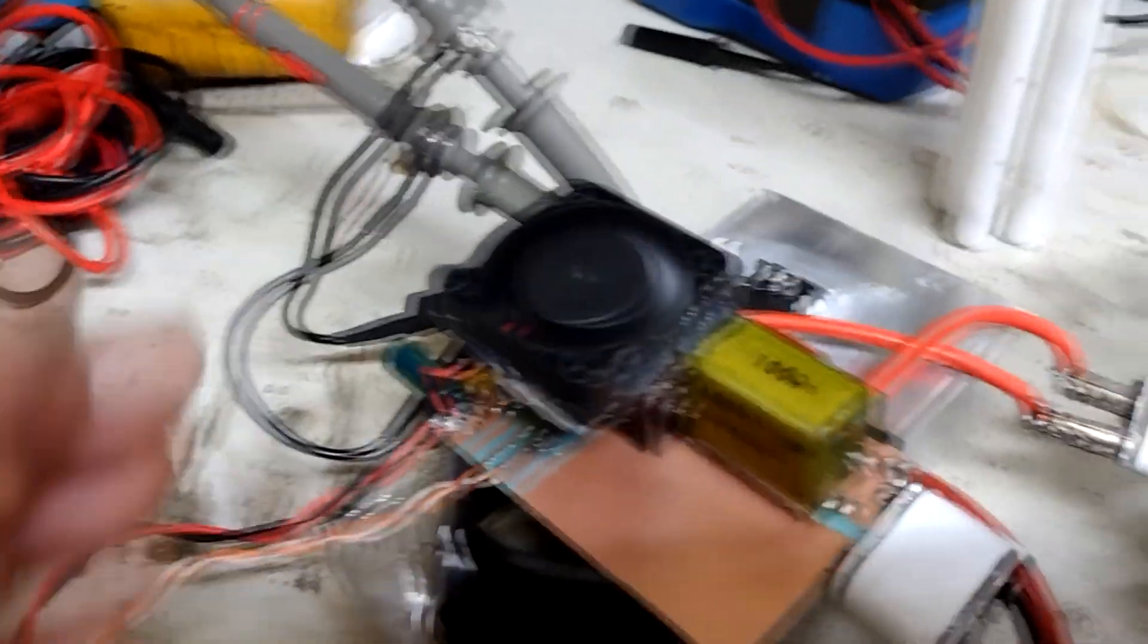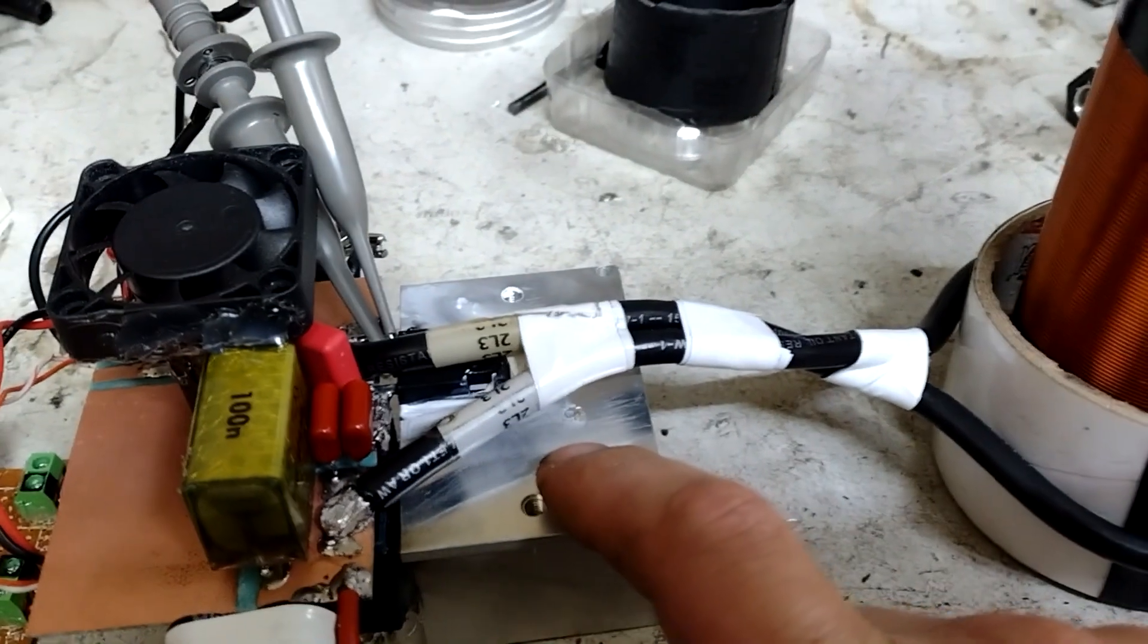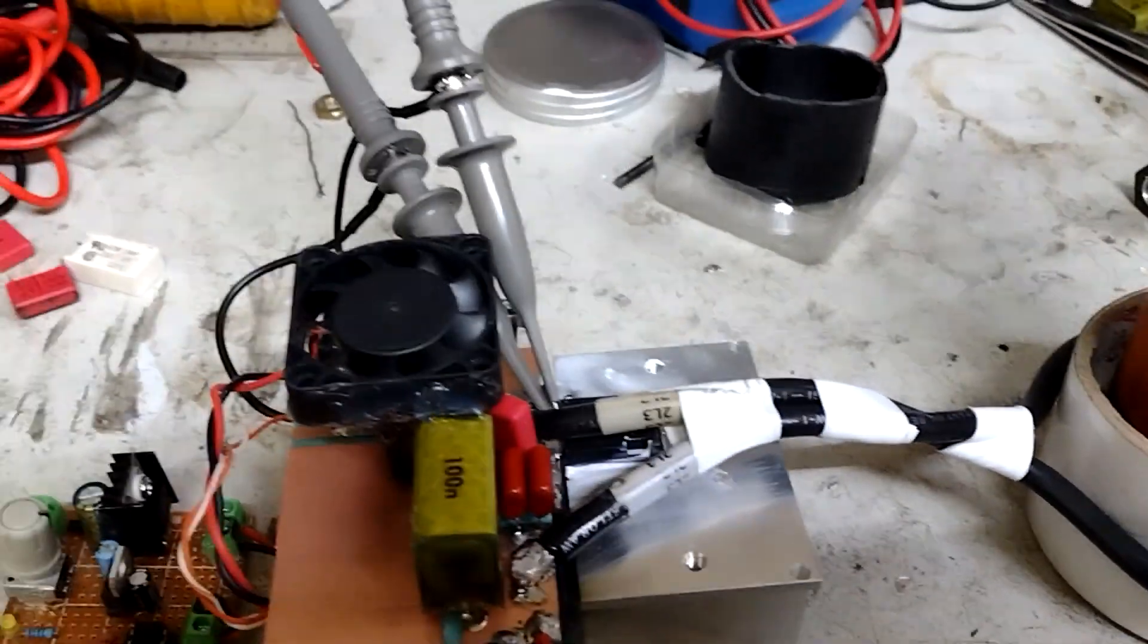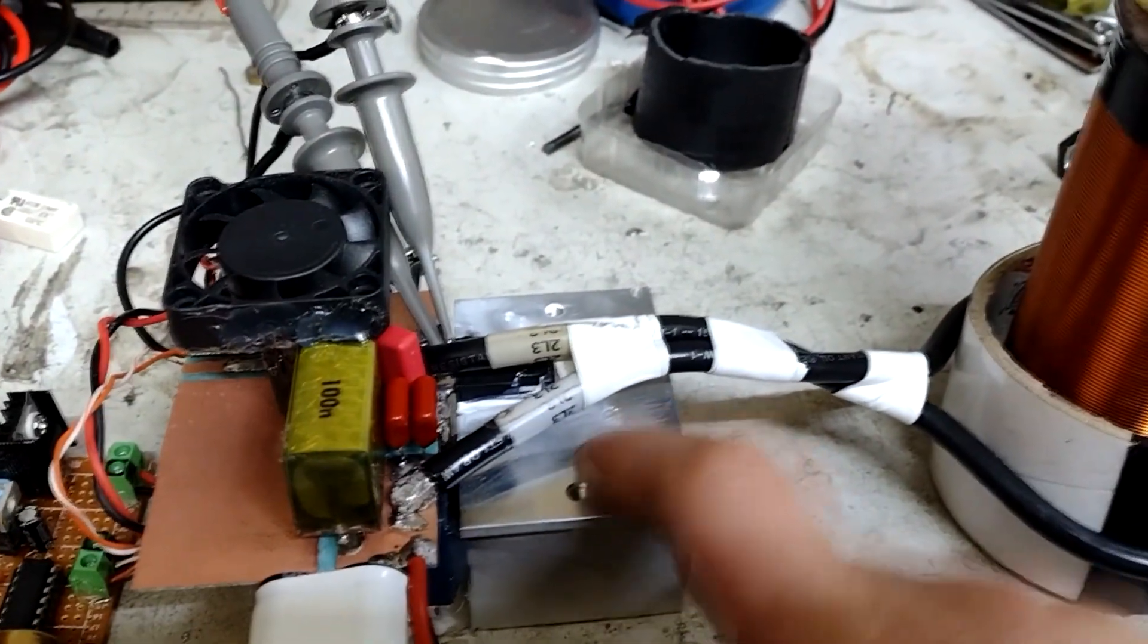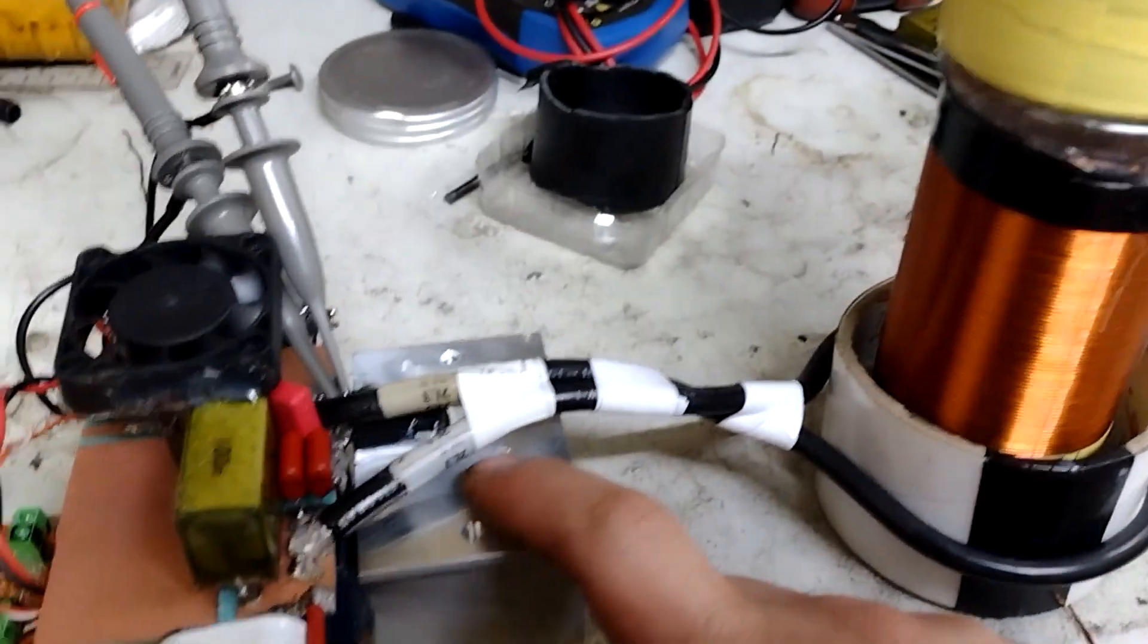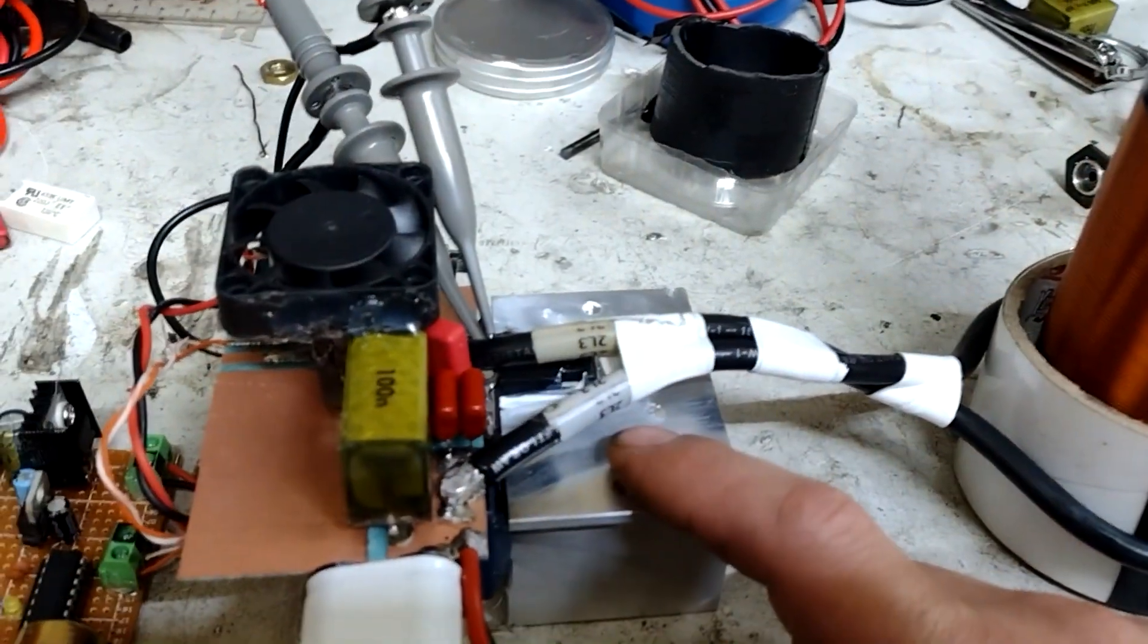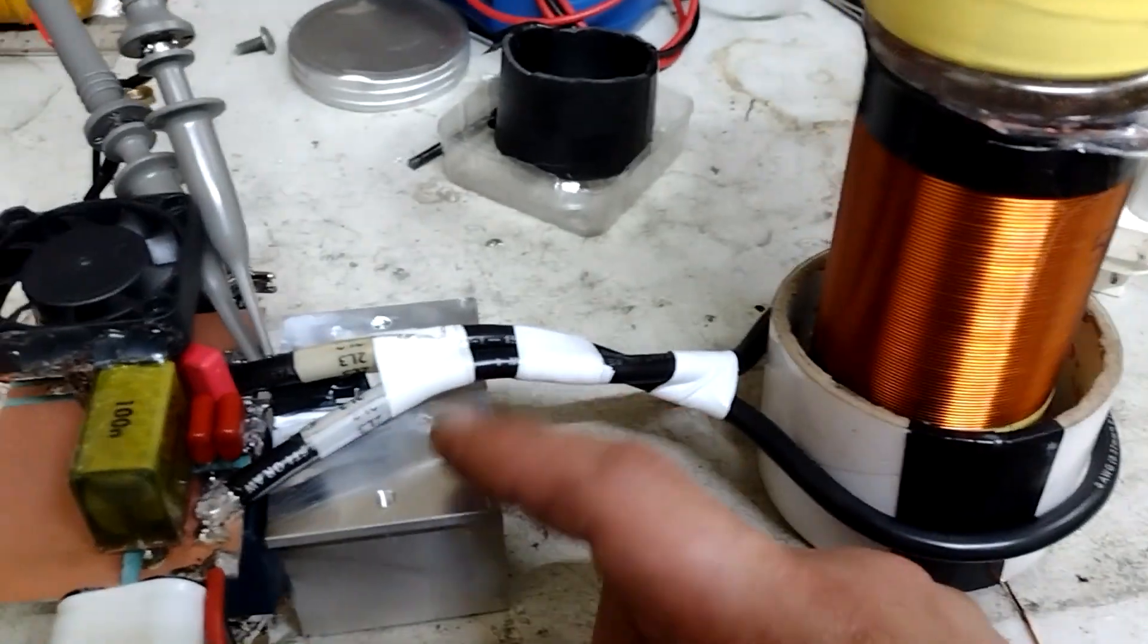With this fan on here I can probably push crazy power through there. Part of the problem with using the silicon carbide FETs is the very fast transitions, get a lot of ringing. The ringing is a lot more prevalent than the regular FETs. Depends on how you drive them, but in this case I'm trying to have fairly fast switching, there is quite a bit of ringing.